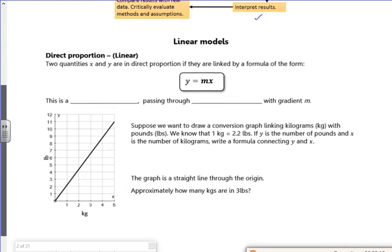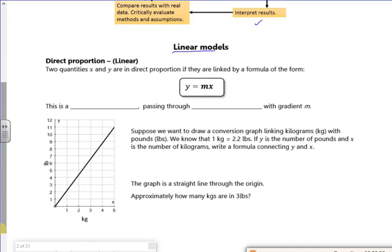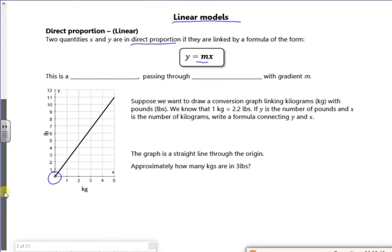We've got different types of models. We're going to go with a straight line first, the linear model. So they're directly proportional and they're linked by a constant and you've got y equals mx. It's just a straightforward thing. So if you remember GCSE, if it was direct proportion, it was all on a straight line and it went through the origin.